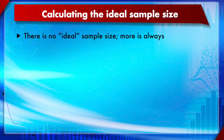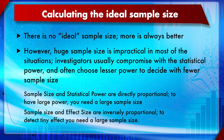How do you calculate the ideal sample size? There is nothing called an ideal sample size — more is always better. The best is 100% power. But a huge sample size is impractical in most situations, so investigators usually compromise with statistical power and often choose lesser power to get a smaller sample size. Sample size and statistical power are directly proportional, while sample size and effect size are inversely proportional.